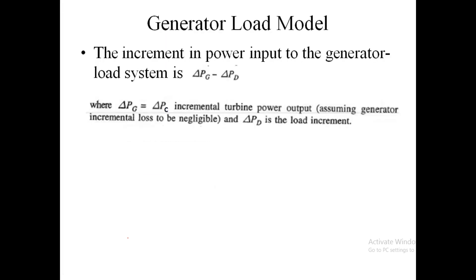The next one is the generator load model. We have discussed about the speed governor system and the steam turbine system. Now we are discussing the generator load model. The increment in power input to the generator load system is represented as delta p_g minus delta p_d, where delta p_d is the demand increase and delta p_g equals delta p_c, which is the incremental turbine power output.